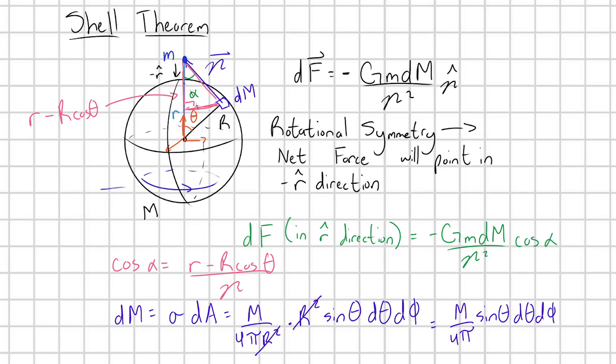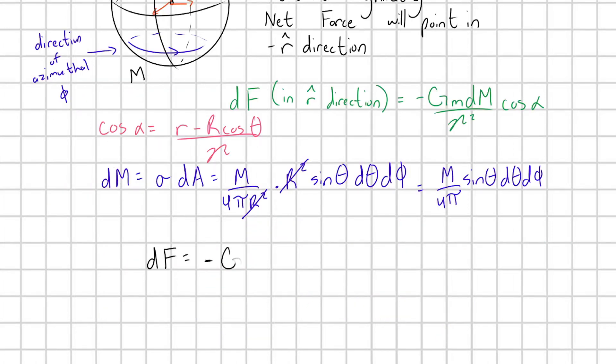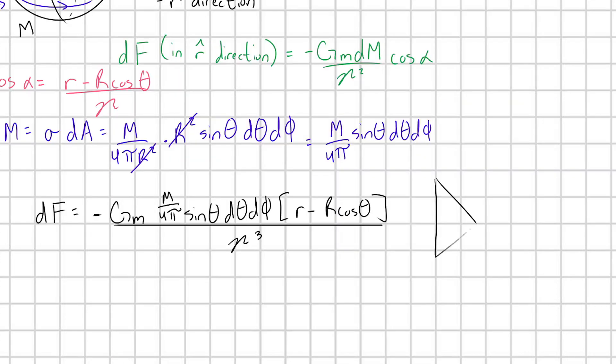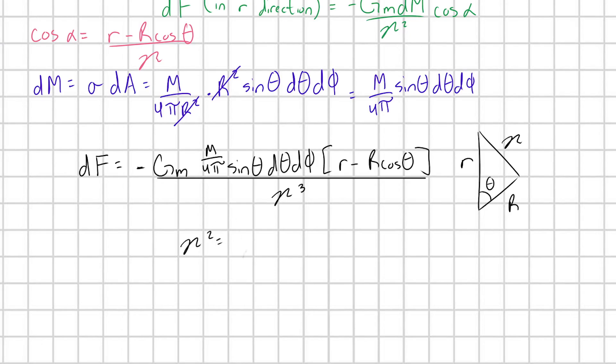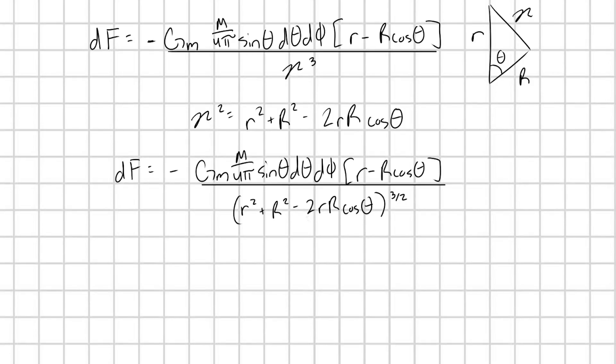Let's go ahead and rewrite df out, and now we have to figure out what script r is. For clarity, let me redraw out the triangle we've been working with, and as soon as I do this, we can clearly see that we can rewrite script r with the law of cosines.